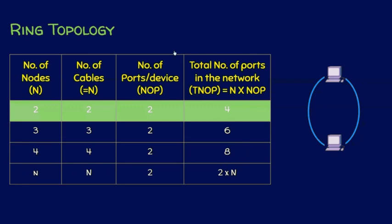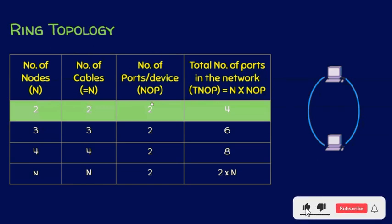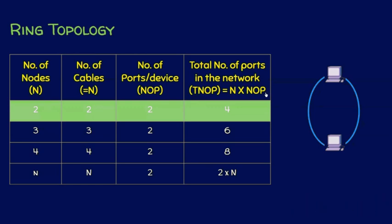I have created a table listing the number of nodes, how many cables are required, the number of ports per device, and the total number of ports in the network. If n is the number of nodes and there are two nodes, we need two cables — that is why n is used in both cases. The number of nodes equals the number of cables in ring topology. Each node must have two ports, so a total of four ports are required when the number of nodes is two.